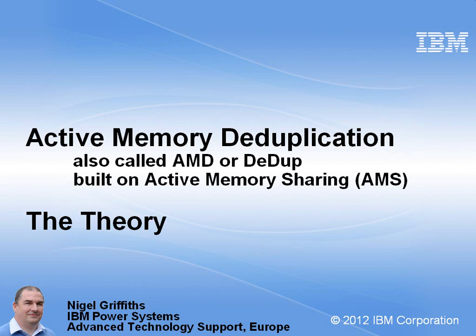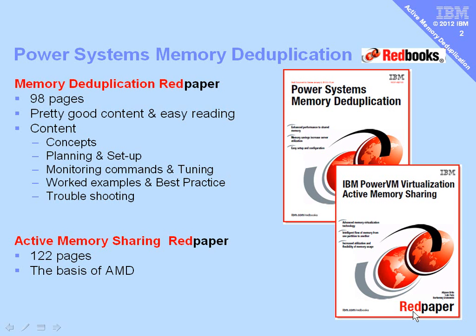Here we're deduplicating memory. This is actually built on top of AMS — active memory sharing — that we've had for three or four years now in our power systems. This session is a theory session rather than a hands-on session, and I'll explain why in a minute. We have a Redbook on memory deduplication, highly recommended and easy to read. We're also basing this on active memory sharing, and there's an older Redbook on that — good reading, and perhaps you should read that one first if you haven't already.